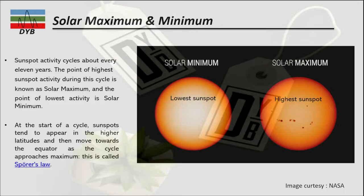At the start of the cycle — say in 2010 — the sunspots tend to appear at higher latitudes and then move toward the equator as the cycle approaches maximum. This is called Spörer's Law. We are not going into the details of this law, but just to observe when sunspots are at maximum and minimum during the cycle.